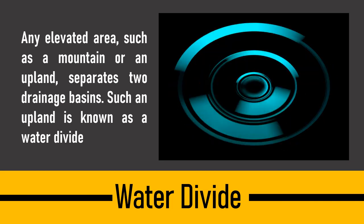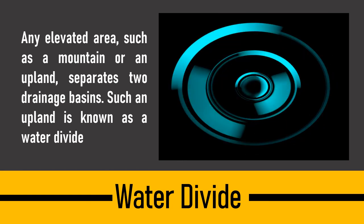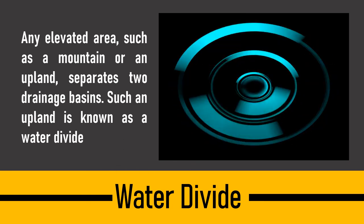Next is water divide. Any elevated area such as a mountain or an upland that separates two drainage basins is known as a water divide. When a river flows from its origin to its destination, it comes across different kinds of terrain — it could be low-lying, rugged, plateaus, or pieces of rock. When such obstacles come across, the river changes its direction of flow.